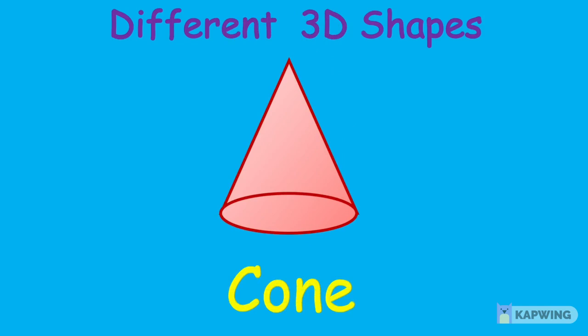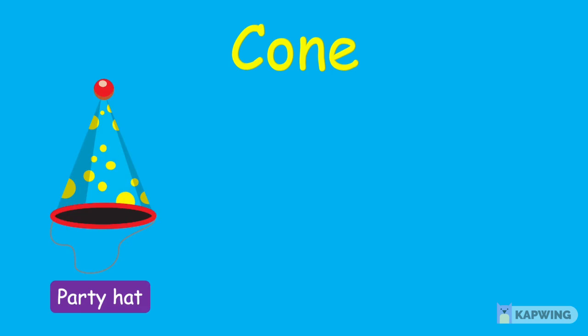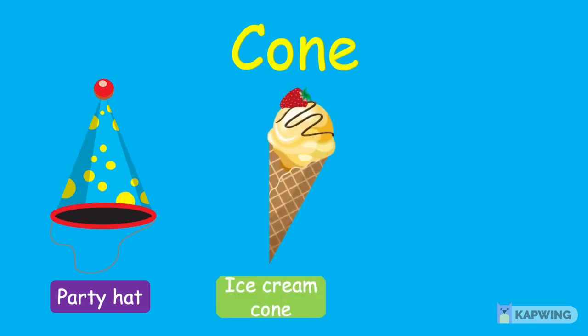Our next shape is a cone. A cone has a circle at the bottom and it all goes up to one point called a vertex. Children, here are a few examples for a cone. A party hat, as you can see, has a circle at the bottom and it all comes up to a point called a vertex. And the best example is an ice cream cone, which we all love to eat. And a traffic cone is also a good example for a 3D cone shape.